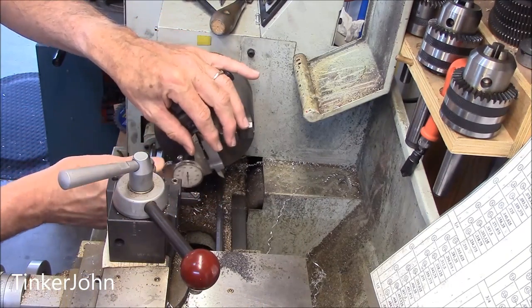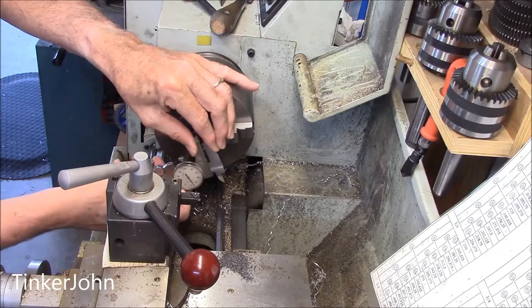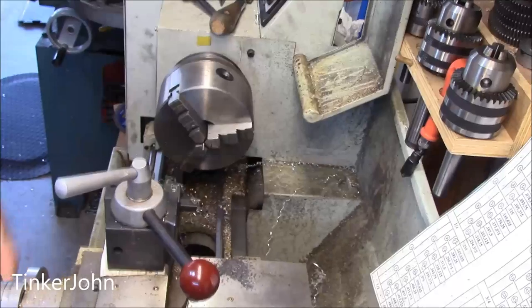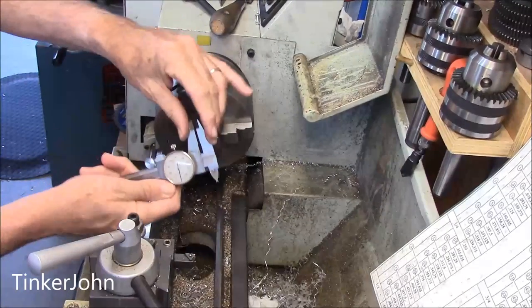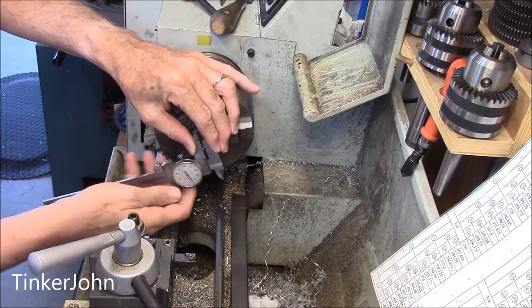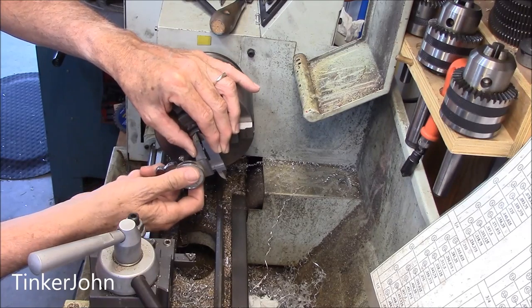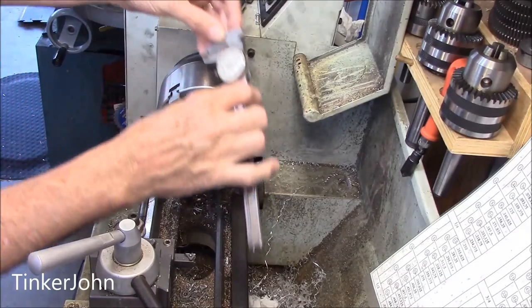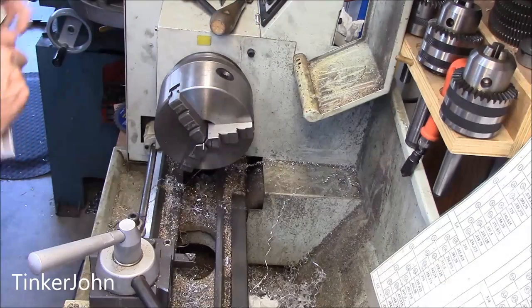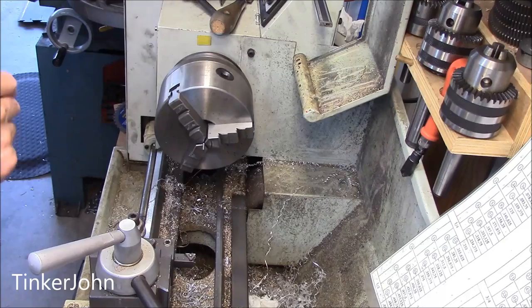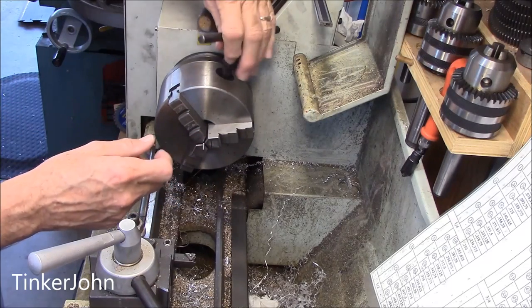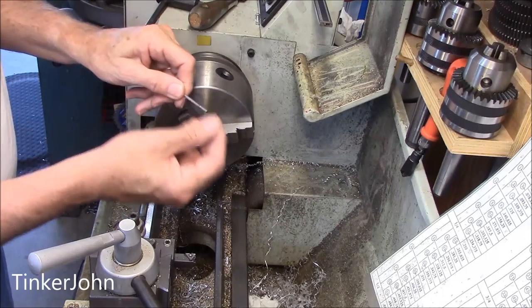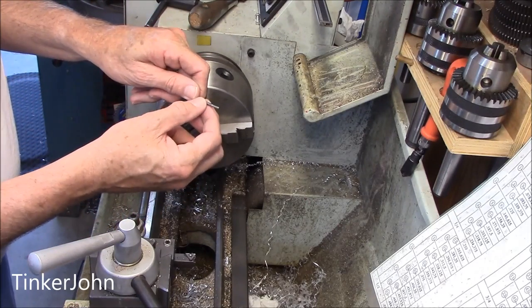93 thousandths, somewhere between 93 and 94 thousandths. 95 thousandths, I'm not going to fret over 1 thousandth on something that's not critical. So I'm off 1 thousandth, a little bit too big, but it'll fit just fine. Let's go back and try it out on the piece.